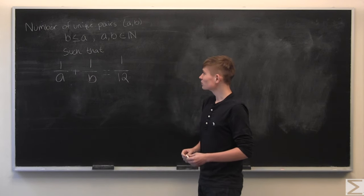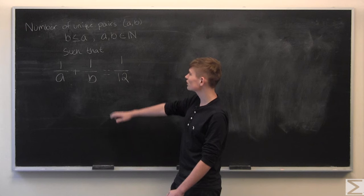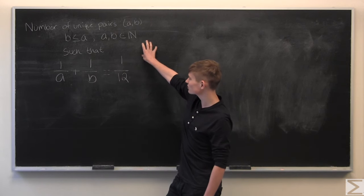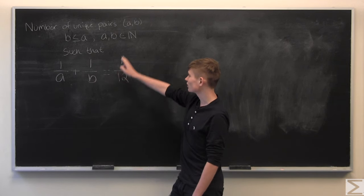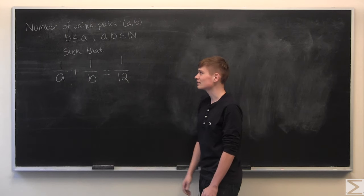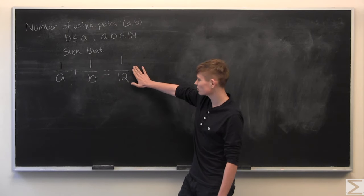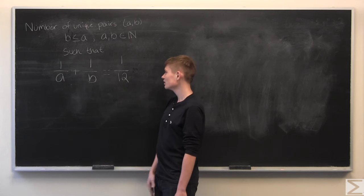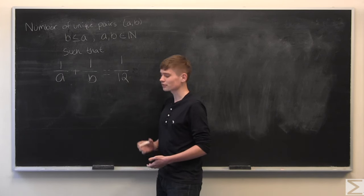This week's problem of the week was to find the number of unique pairs, a, b, where a and b are natural numbers and b is less than a, such that this equality holds: 1 over a plus 1 over b equals 1 over 12.